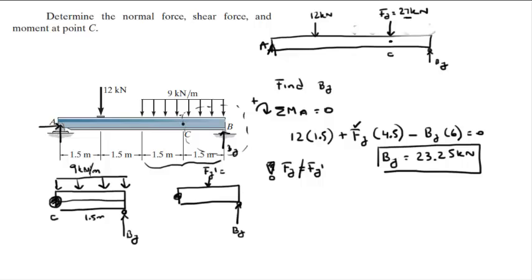Fy prime equals 9 kilonewtons per meter times 1.5 meters, which means Fy prime equals 13.5 kilonewtons. By we already found to be 23.25 kilonewtons.